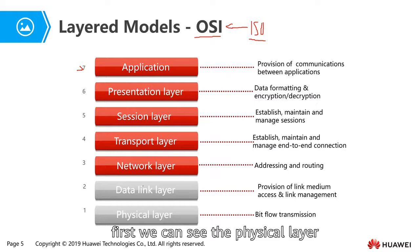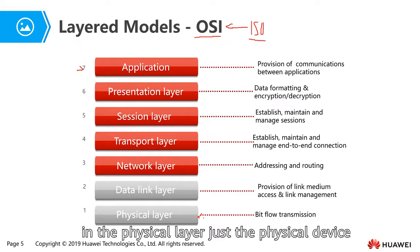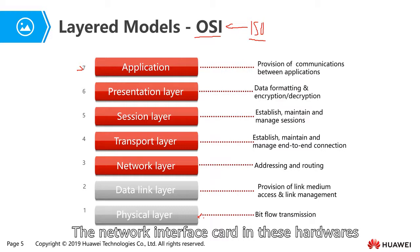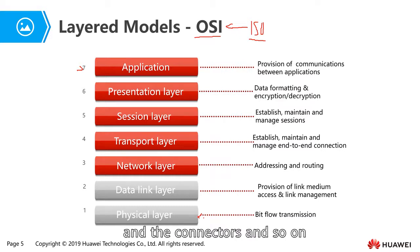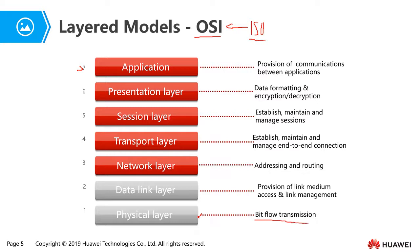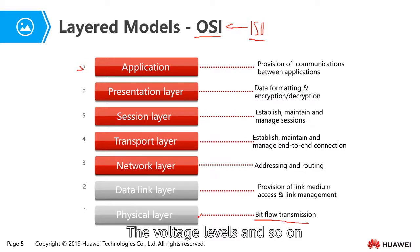First, we can see the physical layer. In the physical layer, we have the physical devices: the lines, the media, the network interface card, the hardware, connectors, and so on. The signals sent on the physical layer are a bit stream — it deals with the signals, the voltage levels, and so on.